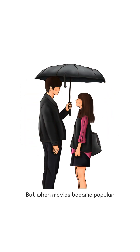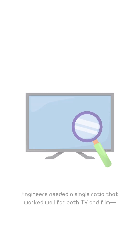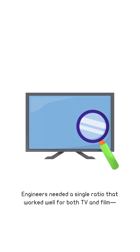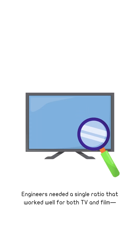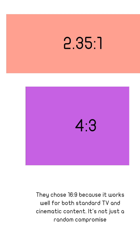Old TVs were nearly square at 4x3, but when movies became popular, wider formats like 2.35x1 were extensively used. Engineers needed a single ratio that worked well for both TV and film, leading to the birth of 16x9 in the 1980s.